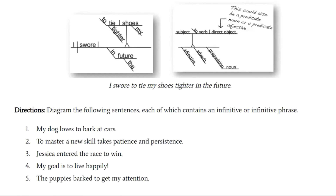When diagramming infinitives, look for the word 'to' and then look for the verb that follows it, then recognize that collectively it functions as some part of speech. In number one, 'My dog loves to bark at cars' — 'to bark' is its own thing, an infinitive. My dog loves what? Loves to bark. Resist the temptation to assume 'to bark' is a prepositional phrase — it's not. Remember, prepositional phrases include the preposition and a noun or pronoun object. Here 'bark' is a verb, so 'to bark' is an infinitive.